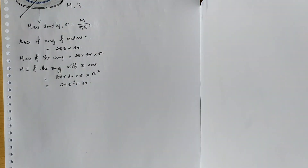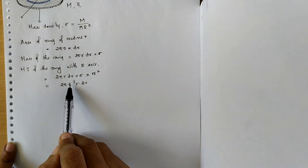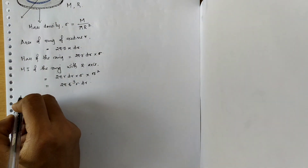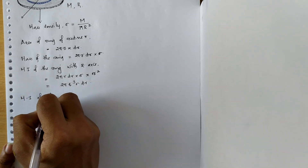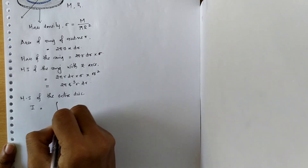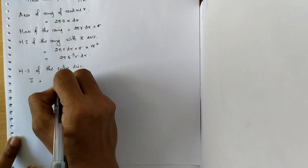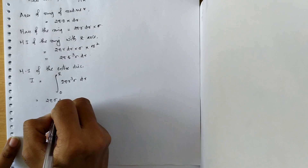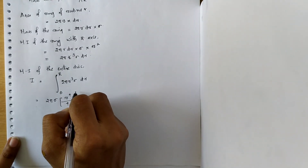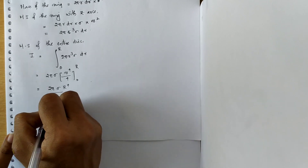In order to find the moment of inertia of the entire circular disc, we integrate over small r from 0 to capital R. The moment of inertia I equals the integral of 2 pi r cubed sigma dr from 0 to R. Taking 2 pi sigma out and integrating r cubed gives r to the power 4 over 4, which becomes 2 pi sigma R to the power 4 by 4.